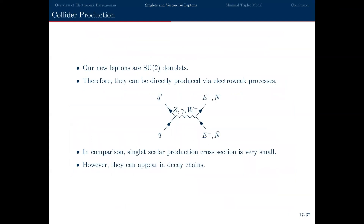That covers the baryogenesis part. The rest is more about collider phenomenology. Baryogenesis models are necessarily testable at colliders. In our case, we have new SU(2) lepton doublets that are necessarily producible via electroweak processes — charged and neutral current Drell-Yan processes will pair-produce the new vector-like leptons. The singlet scalars have a generally small production cross-section since they're produced via an intermediate Higgs, but they're still relevant for collider phenomenology because they appear in the decay chains of the vector-like leptons.